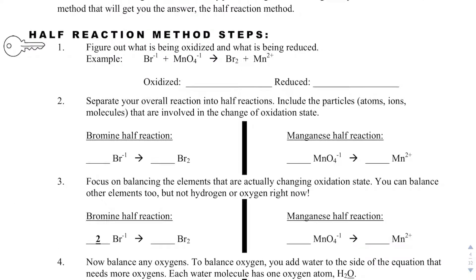The first thing you want to do is identify what is being oxidized and what is being reduced. A good way to do that is to go through and get oxidation numbers. It looks like manganese is going from plus 7 to plus 2, so what is being reduced is manganese in permanganate. And what is being oxidized is bromide — it's going from a minus 1 to a zero oxidation state.